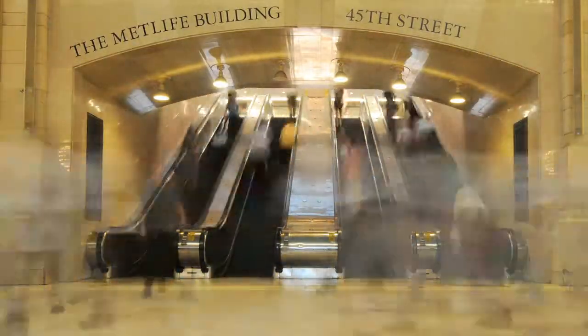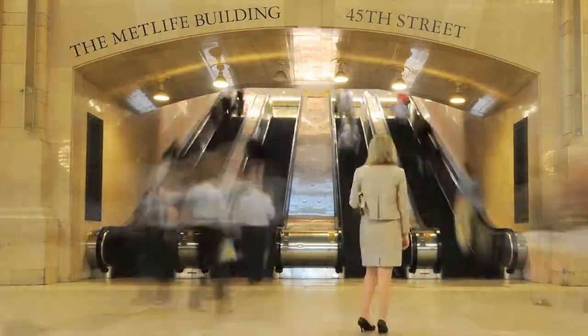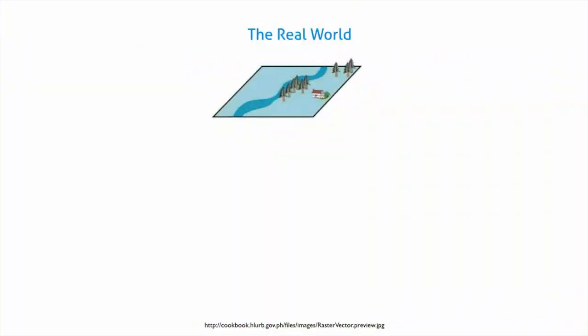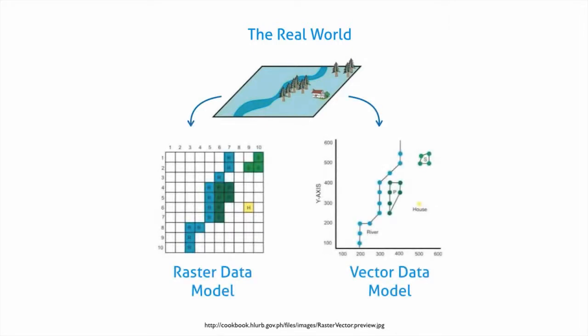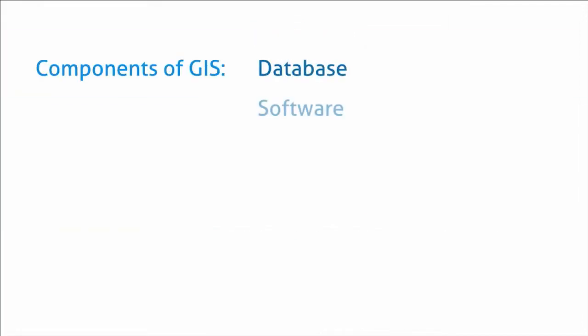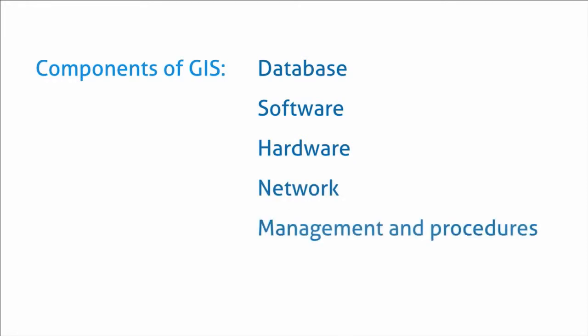The easiest way to think of GIS is to view it as an integrated system of components. GIS includes information about the real world that has been simplified and abstracted into a digital database, including spatial and non-spatial features. GIS is also the hardware and the software that allows for the analysis of the data. Finally, GIS also includes the user, who uses their expert judgment to produce solutions to spatial problems.